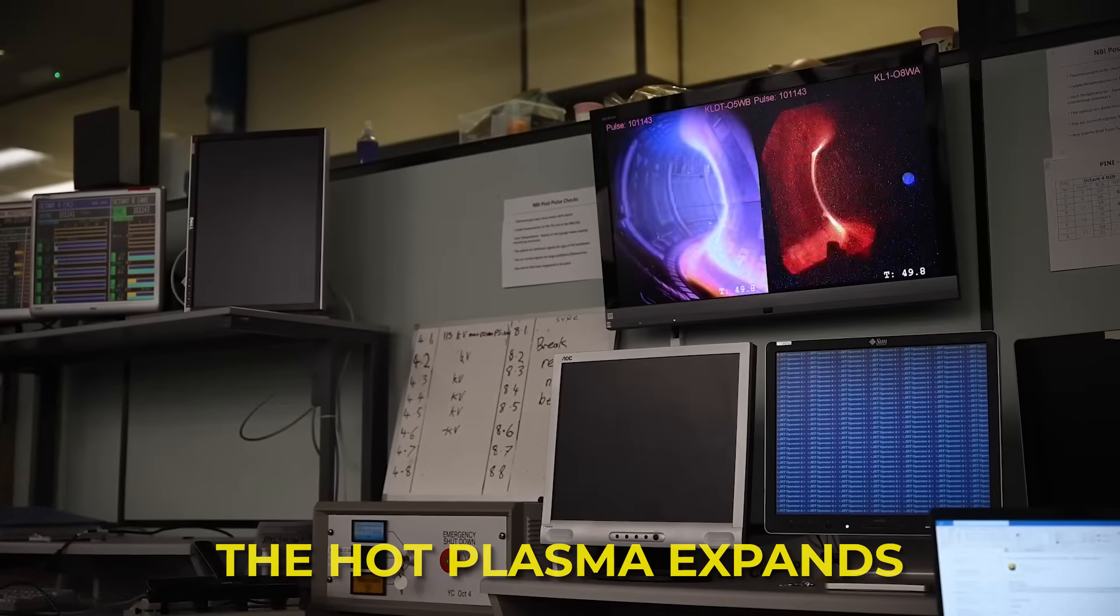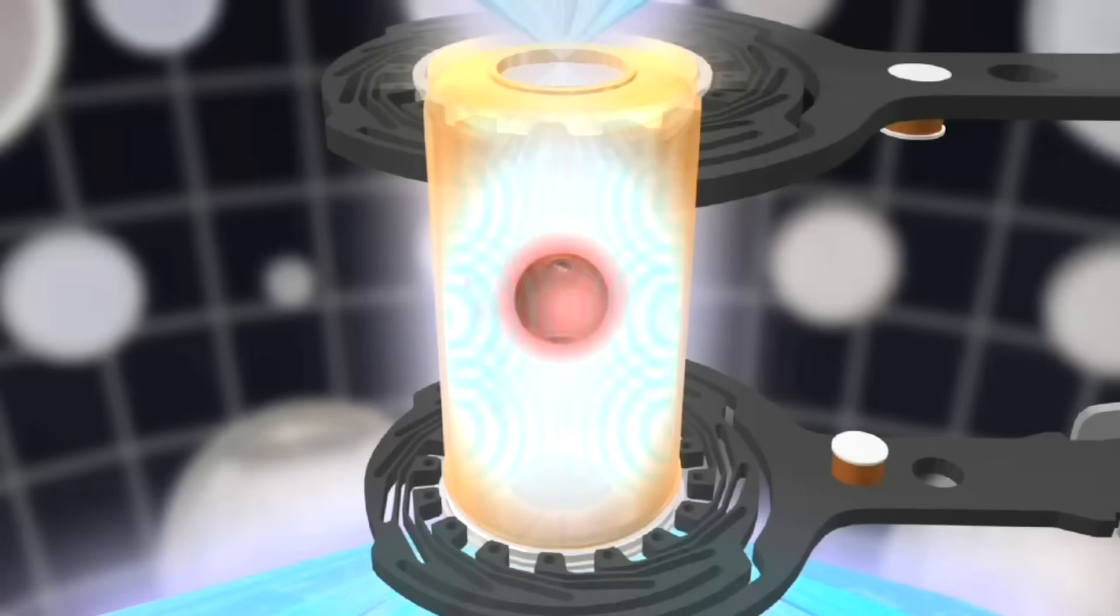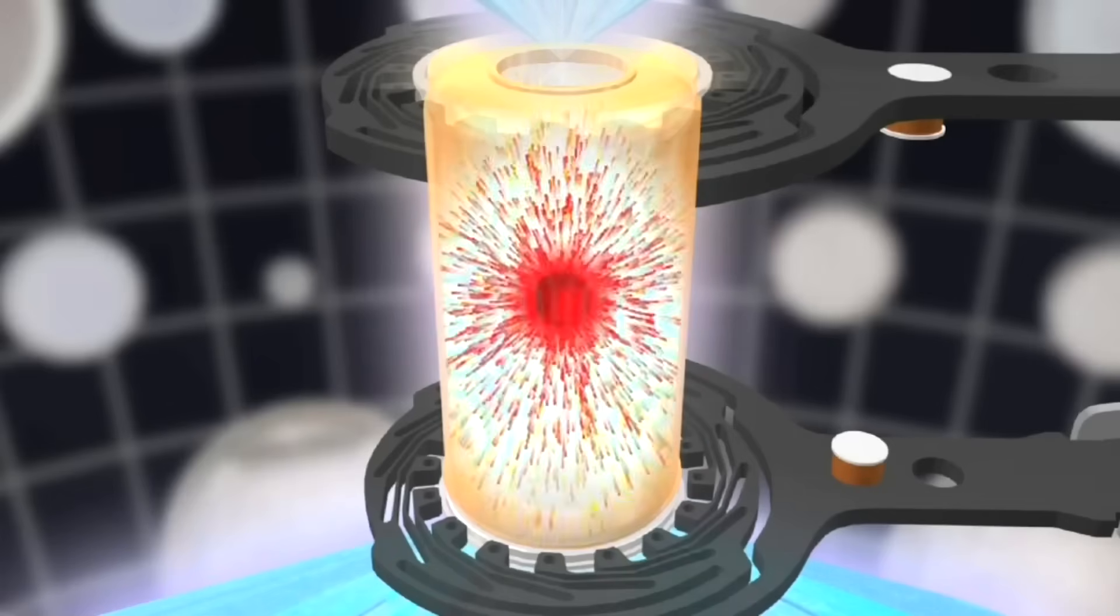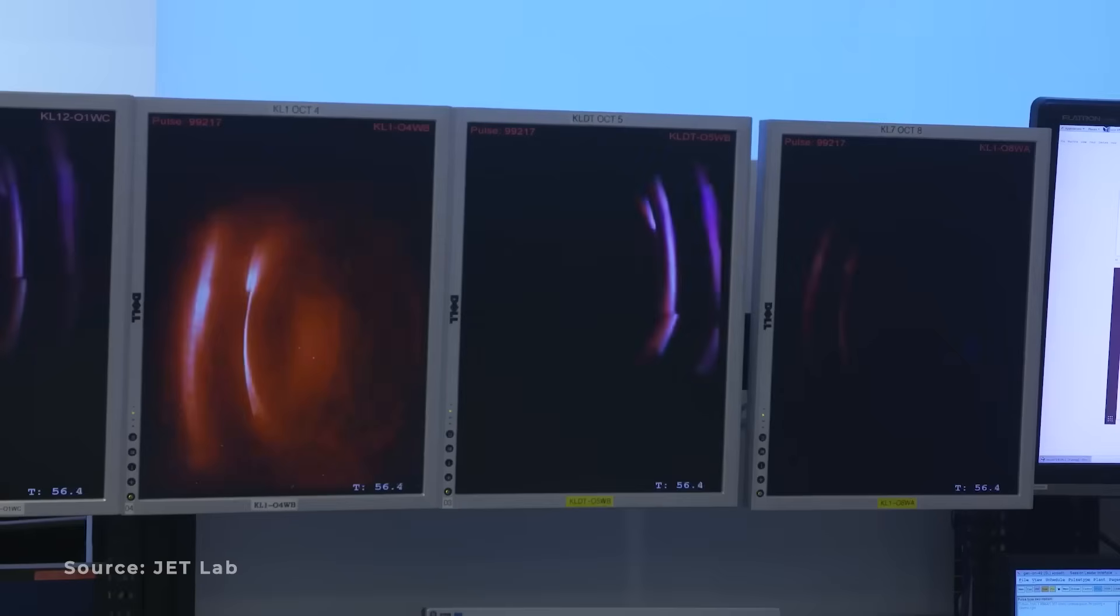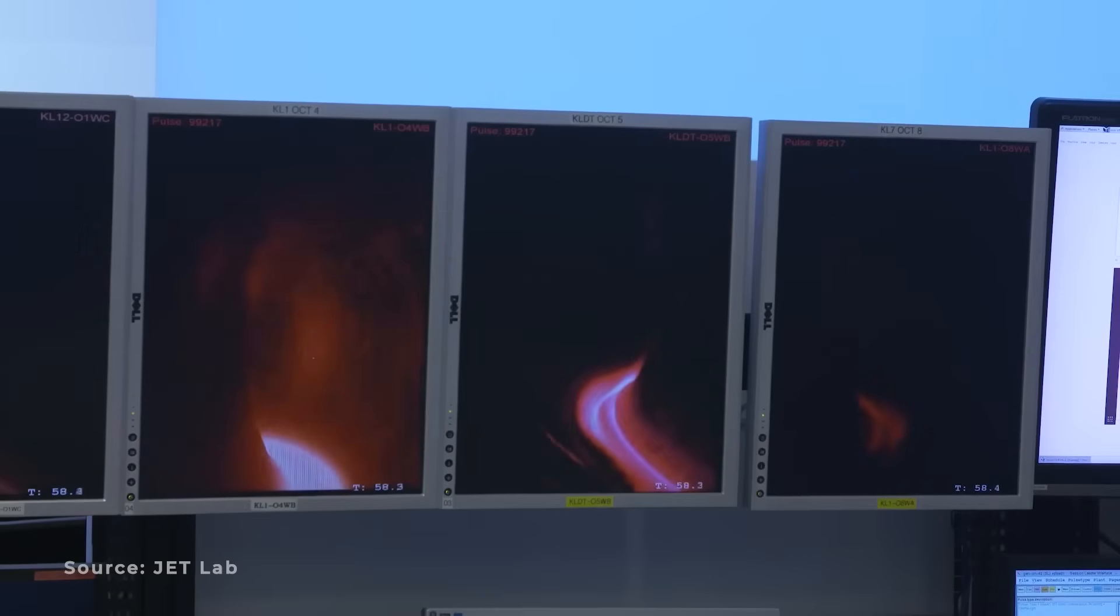After a pulse, the hot plasma expands. As it expands, it pushes back on the surrounding magnetic field. That changing field induces current in the coils, and that current can be captured directly as electricity.